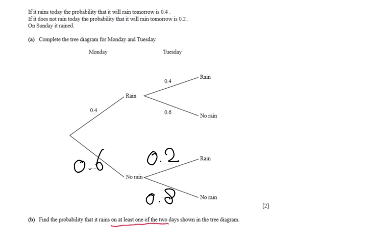On at least one of the two days means you can have rain followed by rain - that's good. Rain followed by no rain is good - that is still at least one of the two days.